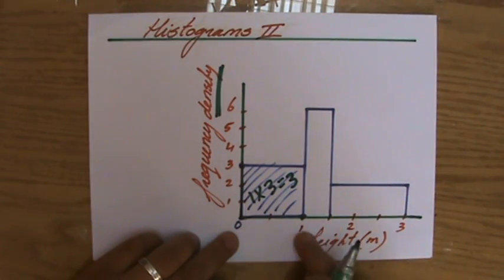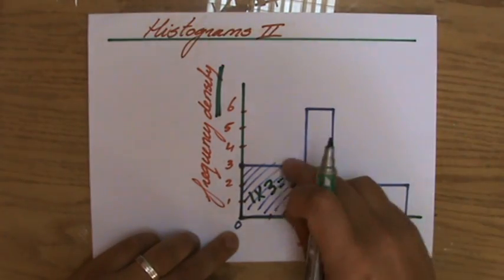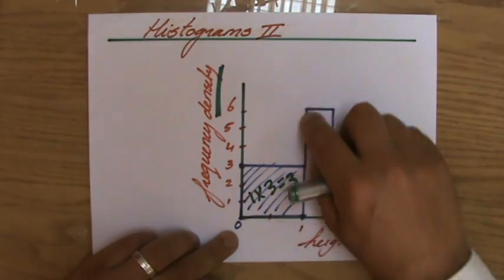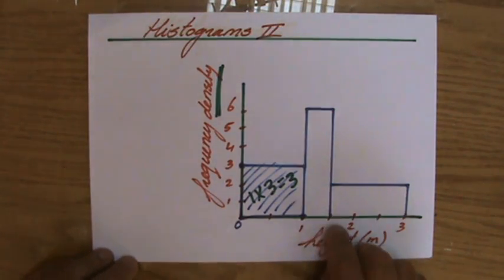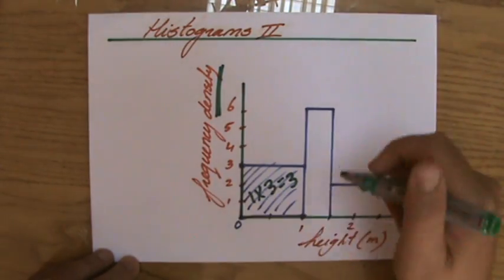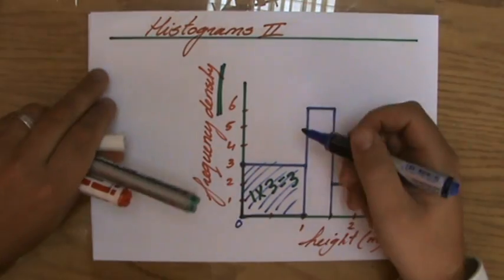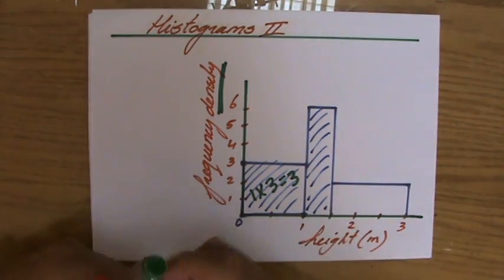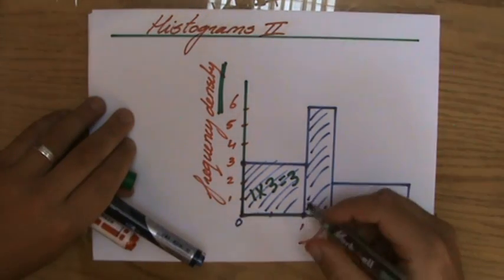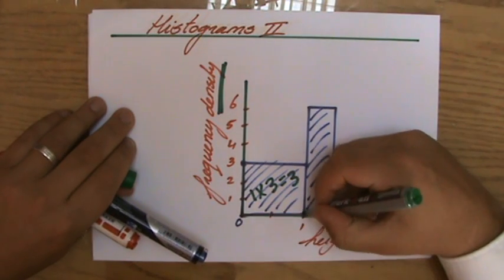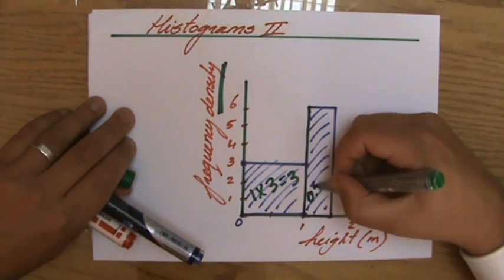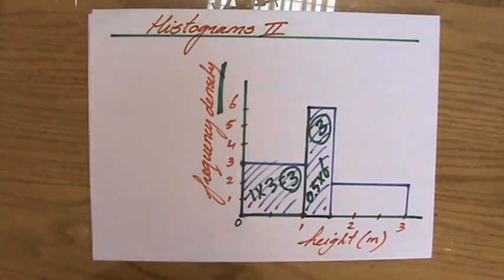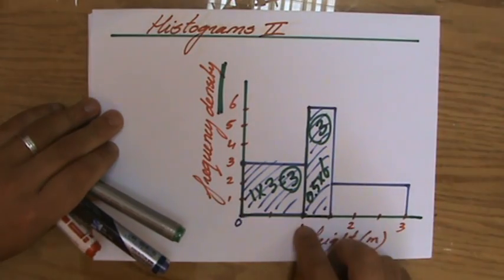So it happens to be the same as the frequency density: one times three. But if you look at the amount of goats between one and one and a half meters, the frequency density is six, but it does not mean I have six goats between one and 1.5 meters. No, because the area of a histogram - so a half times six - the area is going to give me my frequency. So also three goats between one and one and a half meters.